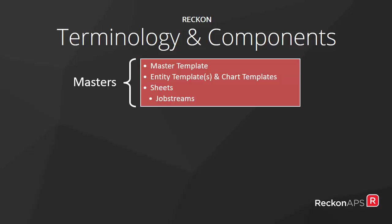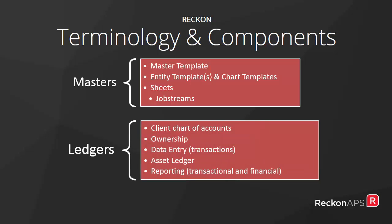We will just refer to those as Ledgers. So what is in your Ledgers? Well, the Ledgers themselves will have their own Chart of Accounts, which generally is copied down from a Master Template or an Entity Template. The Ledger itself has its own Ownership Accounts. The Ledger will have Transactional Details. It will have assets — both book and tax values can be stored for those assets — and it will have its own reporting, both transactional and financial reporting.